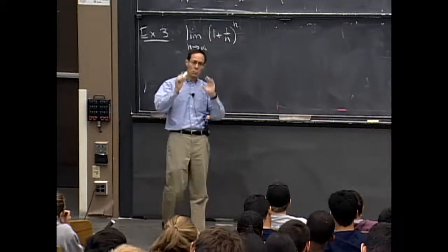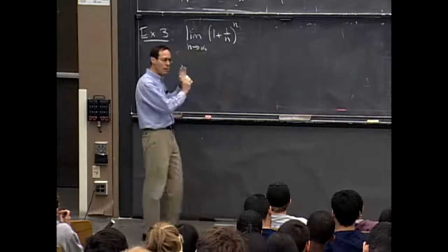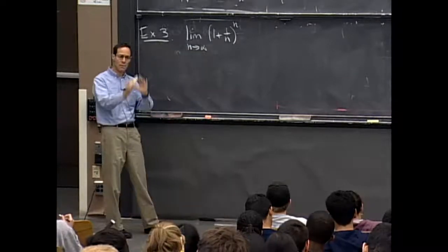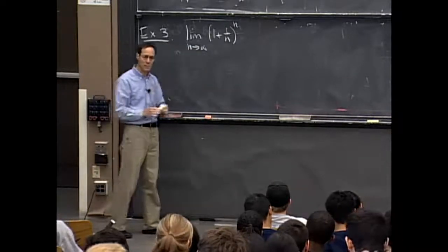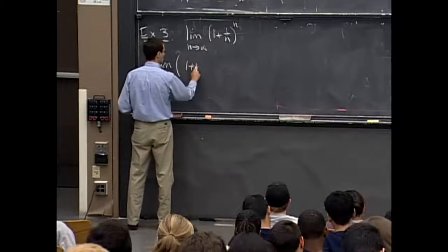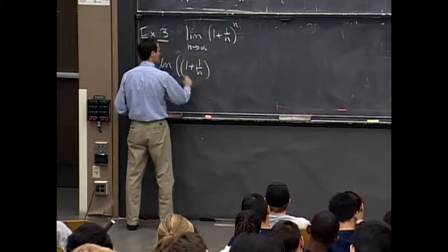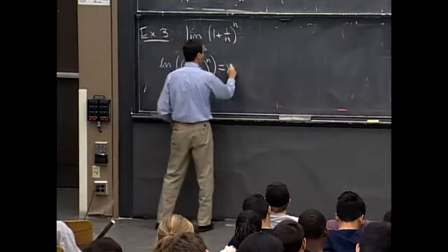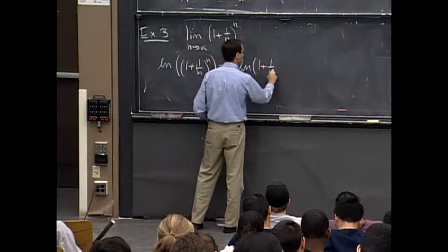So in order to figure out this limit, what we're going to do is we're going to take the log of it and figure out what the limit of the log is instead of the log of the limit. Those will be the same thing. So we're going to take the natural log of this quantity here. And that's n log 1 plus 1 over n.